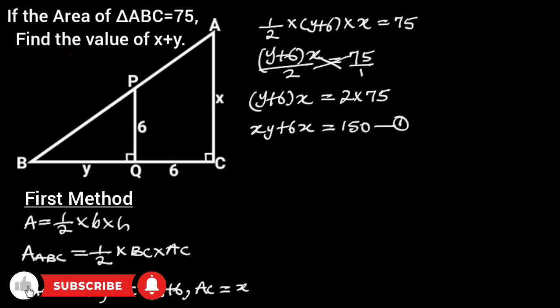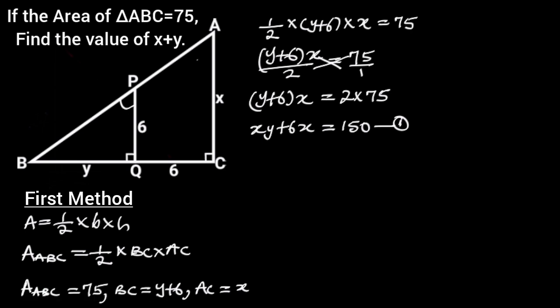Next, let's focus on the figure. From this figure, observe that angle BPQ is equal to angle BAC — reason: corresponding angles or F angles. Angle PBQ is equal to angle ABC — reason: common angles.